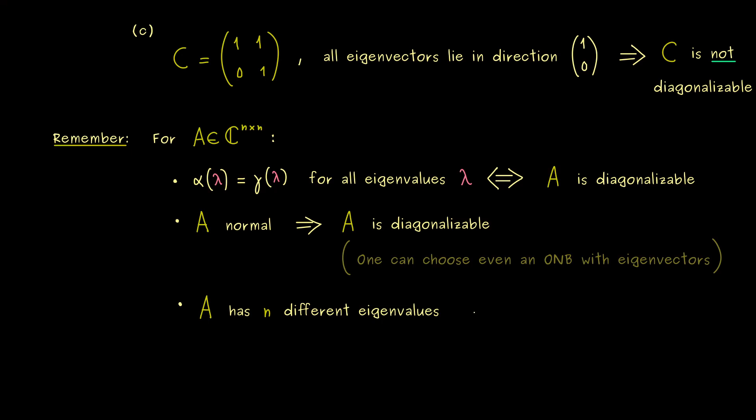So you see, this is already enough. If we have n different eigenvalues, A is diagonalizable. Indeed, this is a very nice criterion, because it means you don't have to calculate any eigenvector at all. You just need to know all the eigenvalues for A.